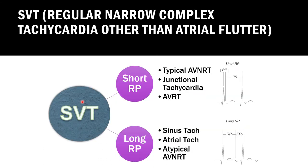In sinus rhythm we look at the PR interval — the distance between the P wave and QRS complex. In narrow complex tachycardia we discuss the RP interval, which is the distance between each QRS complex and the next P wave. If that distance is less than 70 milliseconds, we call it a short RP tachycardia. If it is more than 70 milliseconds, we call it a long RP tachycardia.